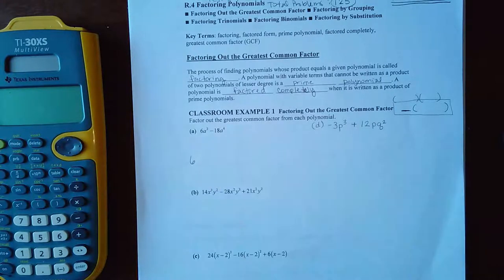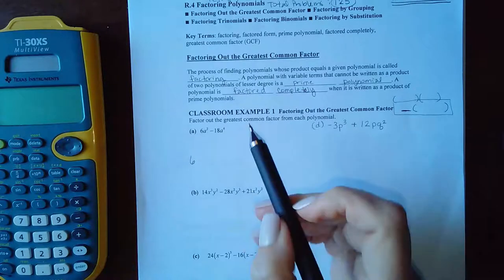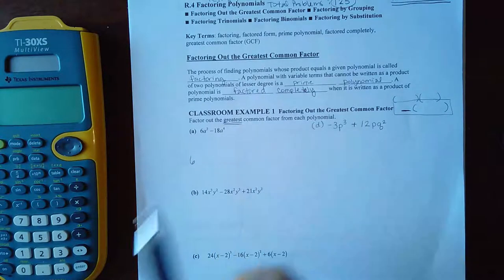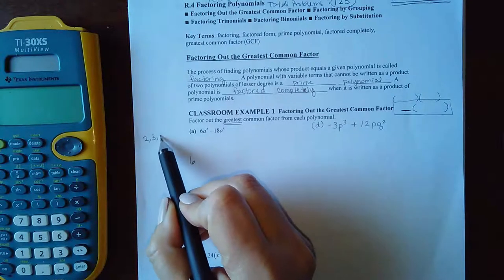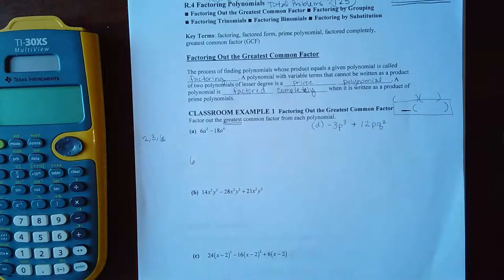I also noticed that both can be divided by 2, and both can be divided by 3. But they're asking you for the greatest common factor, which means out of 2, 3, and 6, I would have to go with the greatest common factor.